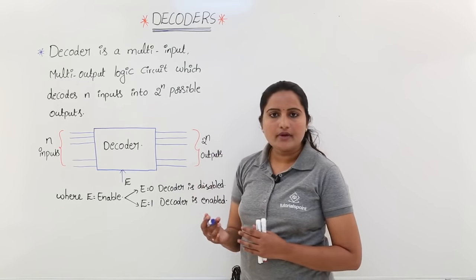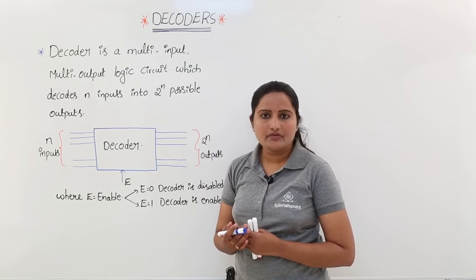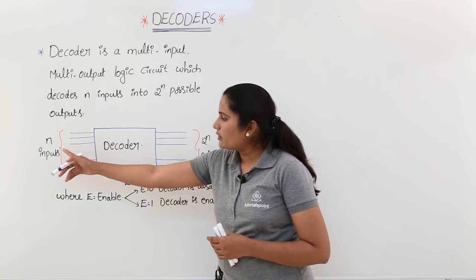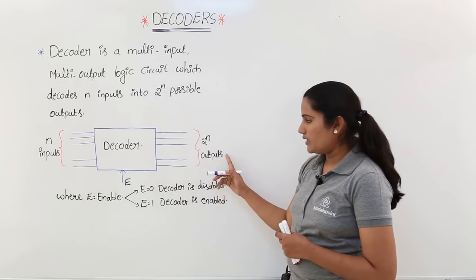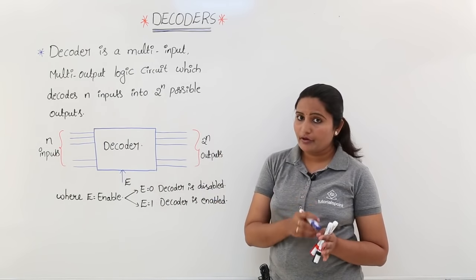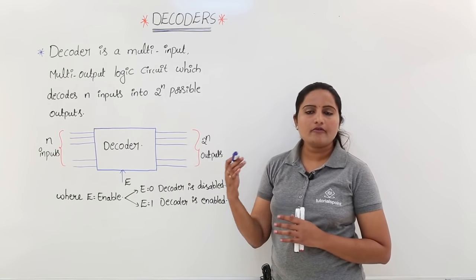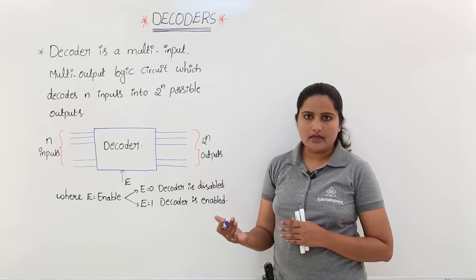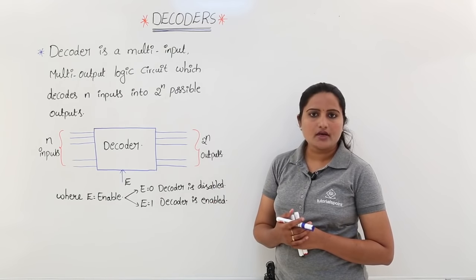We may have multiple inputs and multiple outputs. The relation between input and output is: if input is n, the output is 2 power n. For example, if you are providing 2 inputs, you may have 4 outputs, that is 2 squared outputs.